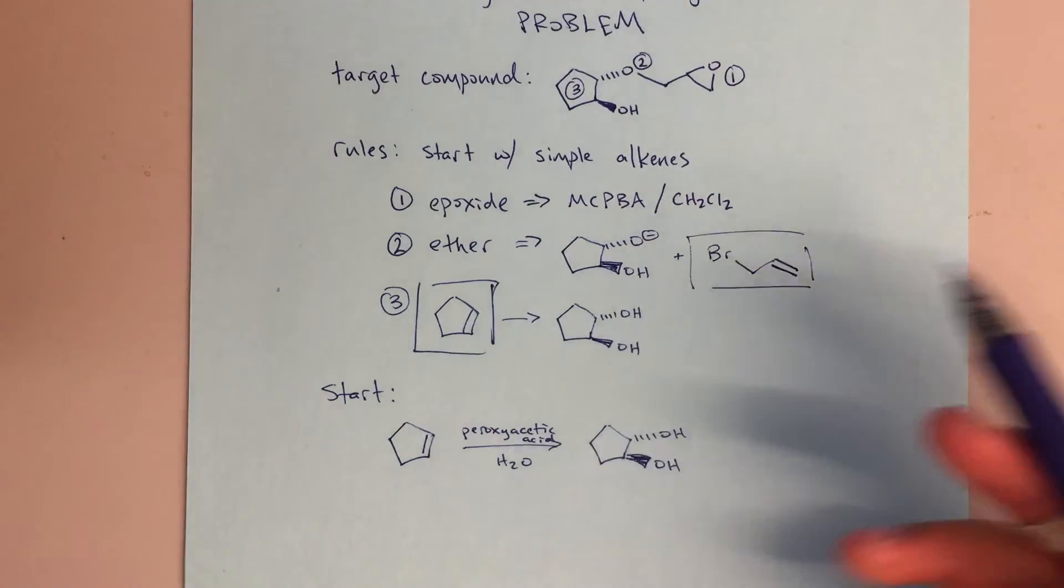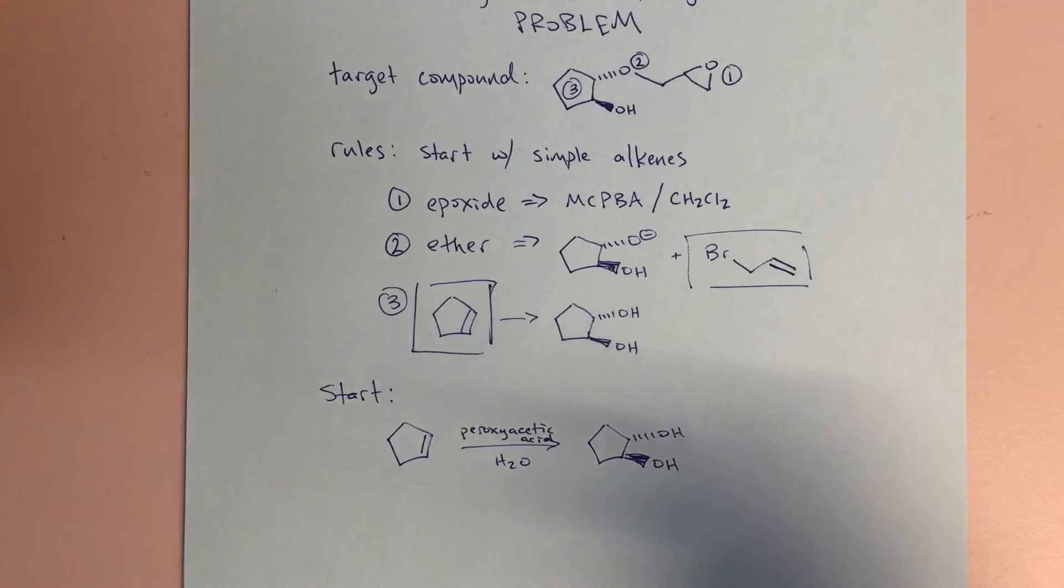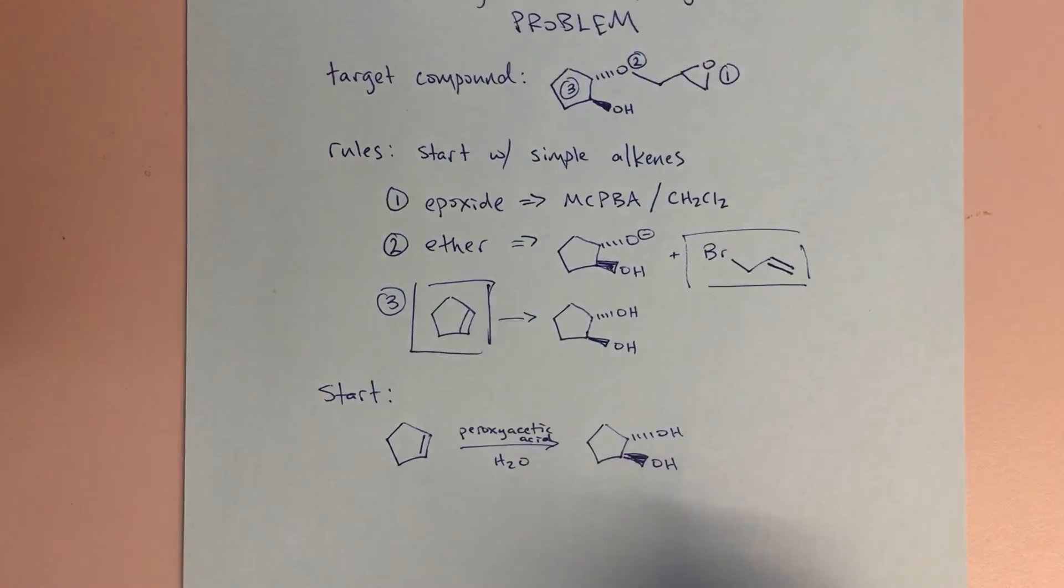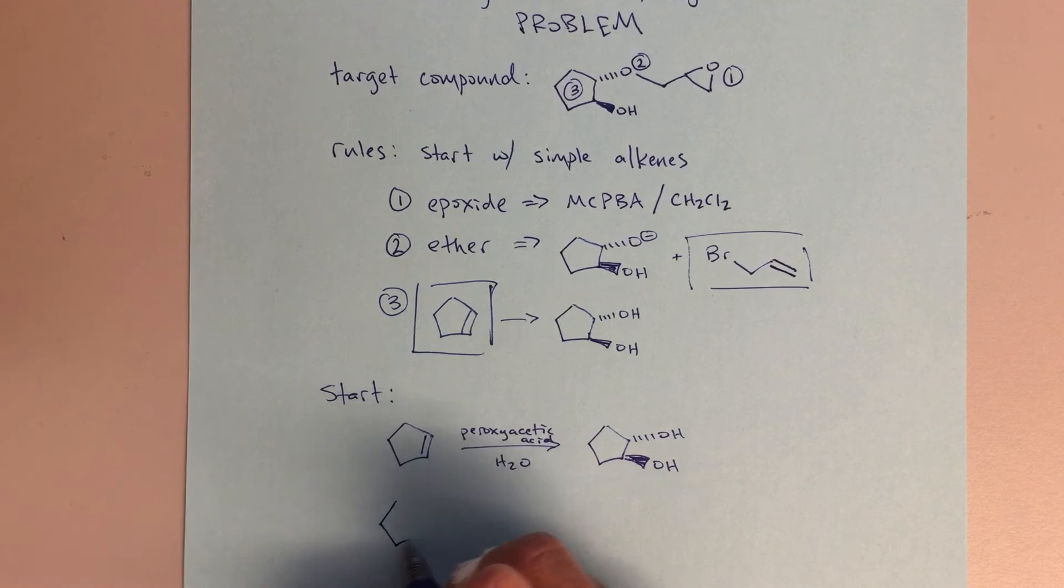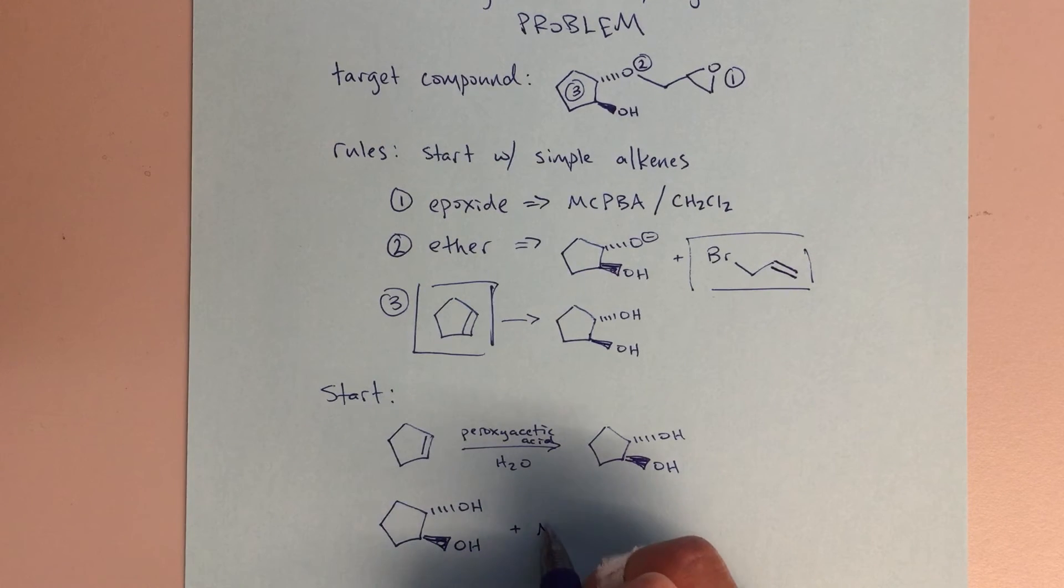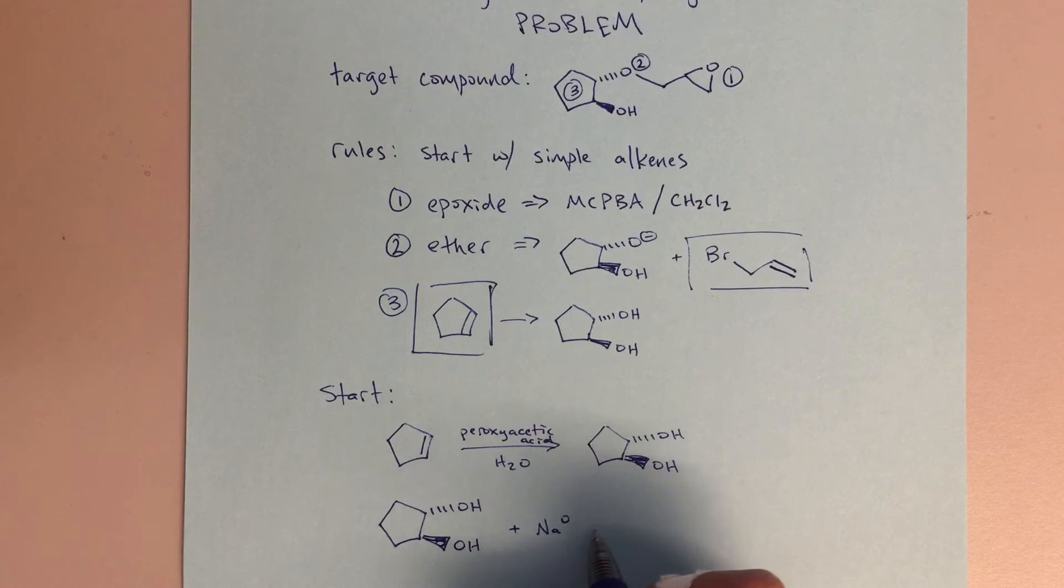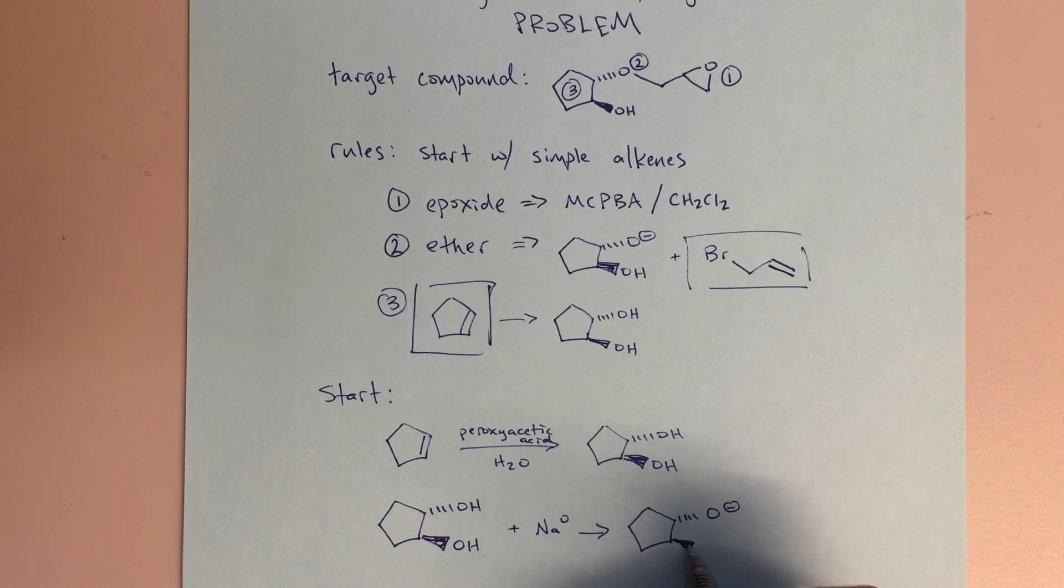That's going to be a trans diol, so the stereochemistry there is very important. If we wanted to make this as our syn addition product, our cis product, then we would use osmium tetroxide, getting ahead of myself a little bit. Here we can now take our diol, and if we react that with sodium metal, with a little zero that indicates sodium metal, that's how we're going to turn that alcohol, one of those particles, into an alkoxide. If we use one equivalent of sodium metal, we will end up with this product.